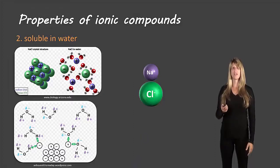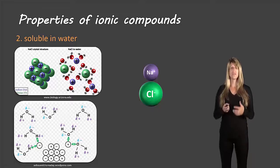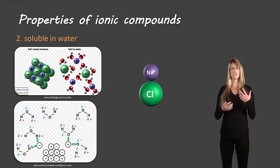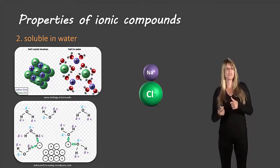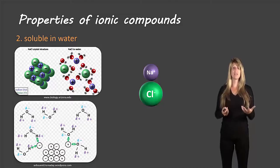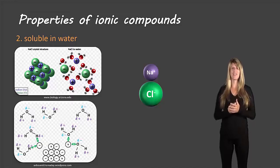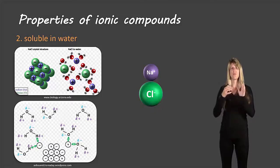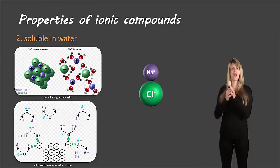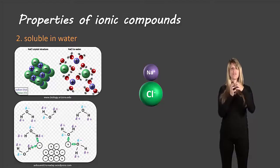The second characteristic is that ionic compounds are soluble in water. Because of their positive and negative charges, they're attracted to water. Water has a slightly positive side and a slightly negative side — the slightly negative side is attracted to the positive part of an ionic compound, and the slightly positive side is attracted to the negative part. This attraction can actually break up the bond between the positive and negative ions.